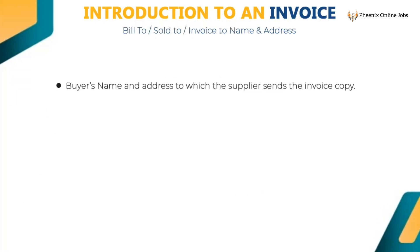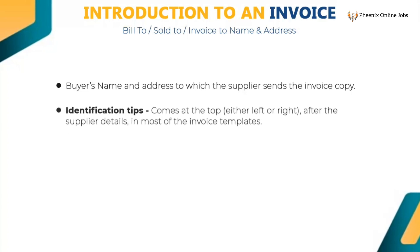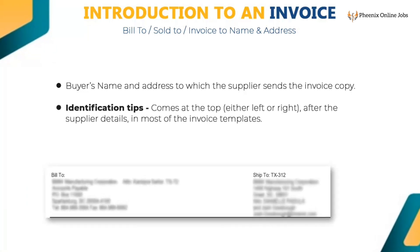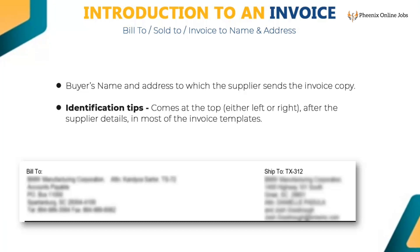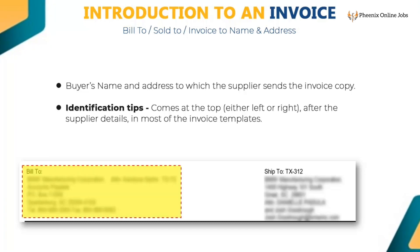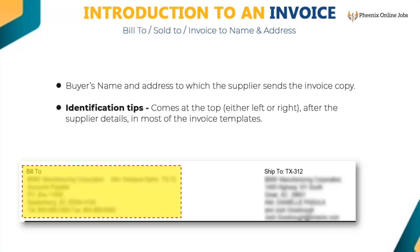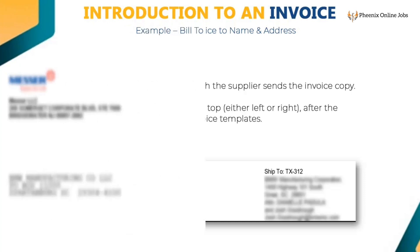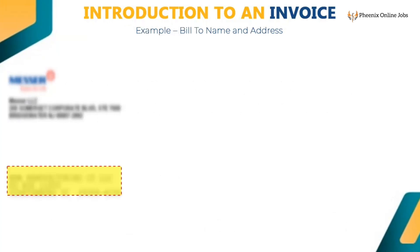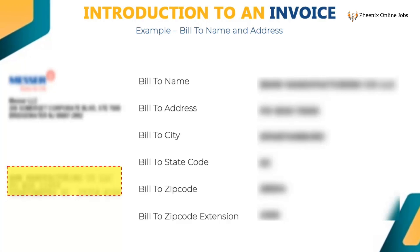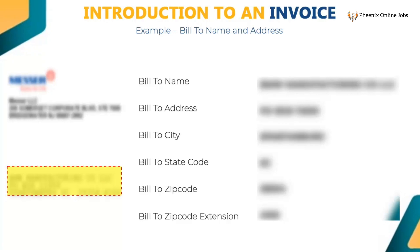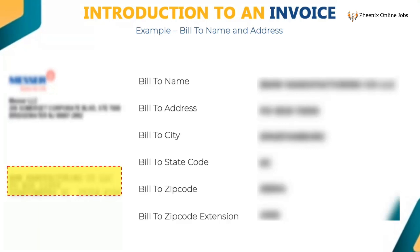The buyer's name and address is where the vendor sends the invoice copy — also called bill to or sold to address. It comes at the top, either left or right, after the supplier details in most invoice templates. Sometimes bill to and ship to address are the same. Example: bill to name: BMW Manufacturing CO LLC, bill to address: PO Box 11000, bill to city: Spartanburg, bill to state code: SC, bill to zip code: 29304, extension: 4100.